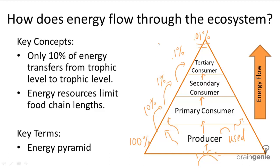Clearly tertiary consumers need to eat more than primary consumers, because primary consumers already receive 10% of the energy from producers. For example, a lion that lives in Africa would have to eat a lot of secondary consumers and primary consumers. You may notice that a lion spends most of its day either hunting or sleeping, because it spends a lot of energy hunting for its food.